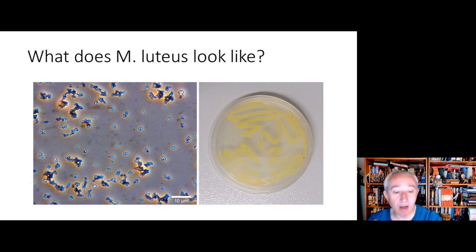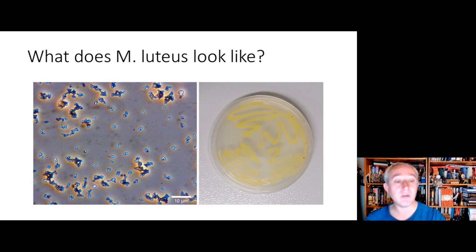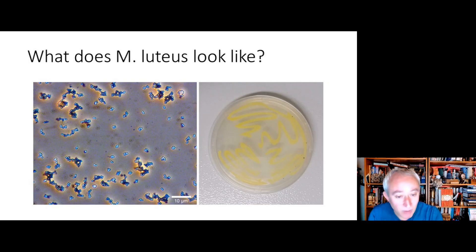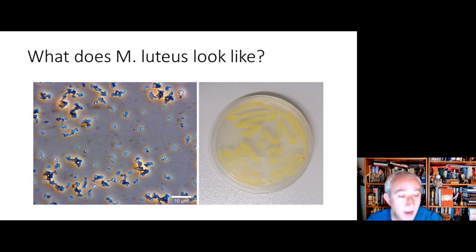These patterns are known as tetrads or semi-regular clusters, which helps a microbiologist identify the organism. Another clue is that when streaked onto an agar plate — shown on the right-hand side — the colonies are circular with a very clear yellow pigmentation. Looking more closely, the colonies are convex and smooth. This is the distinctive pattern of Micrococcus luteus.